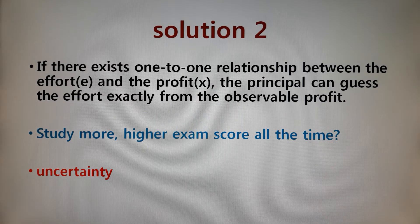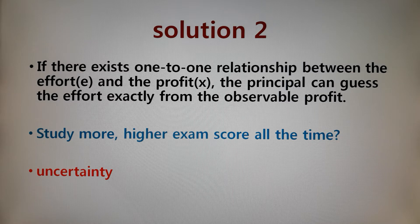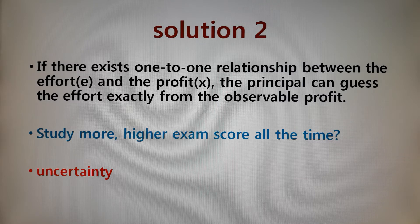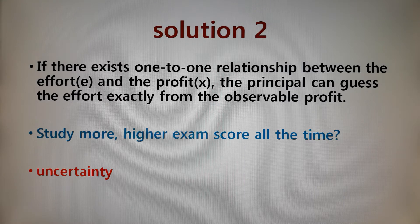Hello everyone. This is lecture 32 of the Game Theory course, the second lecture of week 11. We are talking about the principal-agent problem, especially the moral hazard, where the agent — the part-time worker Bill in our example — can work hard, increasing his effort level. But because the principal, the store owner Tom, cannot observe and verify Bill's effort level, Bill may say he worked very hard even though he didn't.